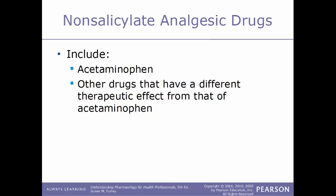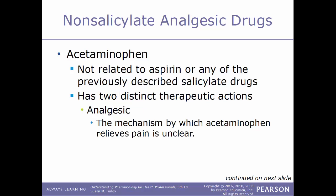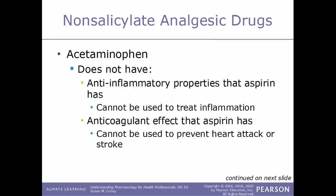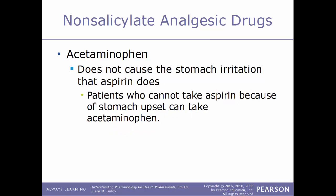The non-salicylate analgesic drugs include acetaminophen and other drugs with different therapeutic effects. Acetaminophen is not related to aspirin or any other salicylate drug. Acetaminophen has two distinct therapeutic actions: it is an analgesic that relieves pain, and it is an antipyretic that reduces fever by acting on the hypothalamus to cause vasodilation and sweating. However, acetaminophen does not have any anti-inflammatory properties like aspirin does, and does not have the anticoagulant effect of aspirin, so it cannot be used to prevent a heart attack or stroke. Acetaminophen does not cause the stomach irritation that aspirin does.